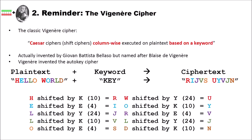Now let's have a look at the Vigenère cipher — more specifically, the classic Vigenère cipher. The Vigenère cipher is a bunch of Caesar ciphers, which are shift ciphers, that are column-wise executed on plaintext based on a keyword. If you don't know what a Caesar or shift cipher is, you may look at my videos about Caesar ciphers on this channel. The classic Vigenère cipher was actually not invented by Blaise de Vigenère — it was invented by Giovan Battista Bellaso, but was later named after Vigenère. He actually invented the autokey cipher, which is related but different.